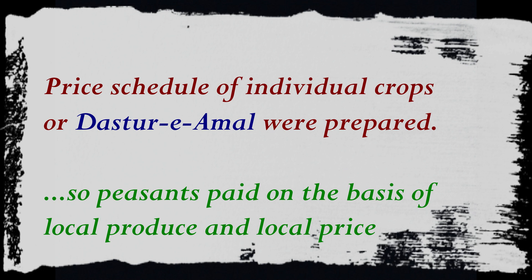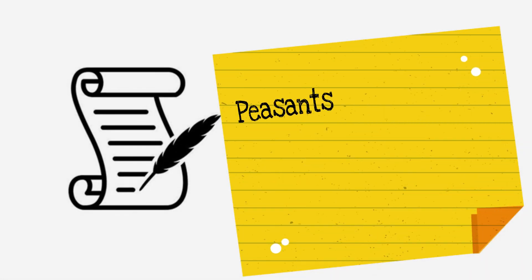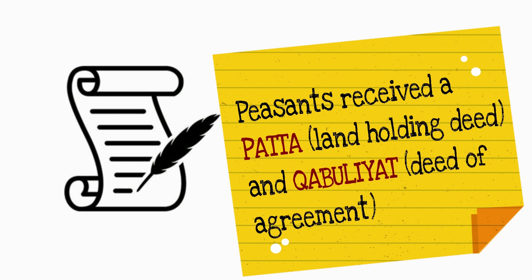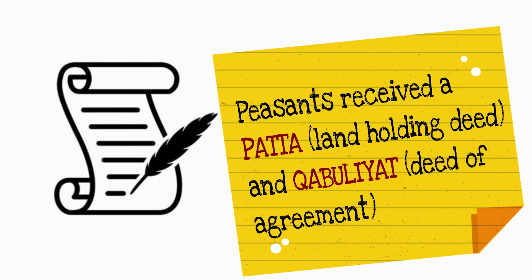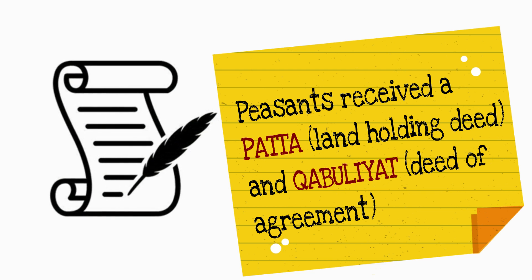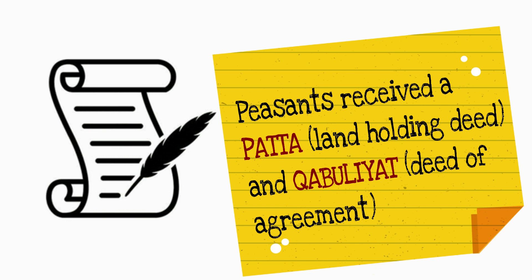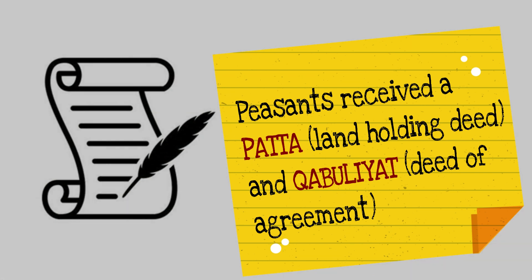As the system kept in mind the local production and prices, the peasants were required to pay on the basis of local produce as well as local prices. Additionally, each cultivator also received a patta or title deed — a land holding deed — and a kubuliyat, a deed of agreement, in accordance with which the cultivator had to pay his dues.